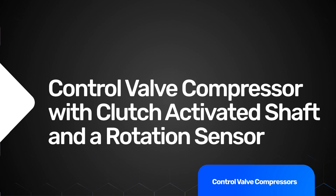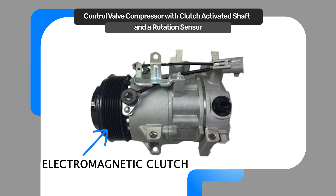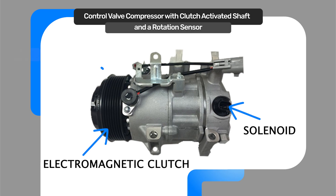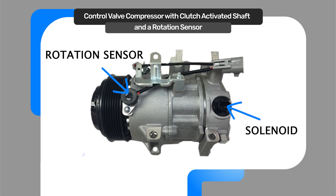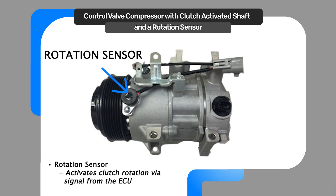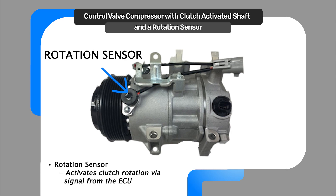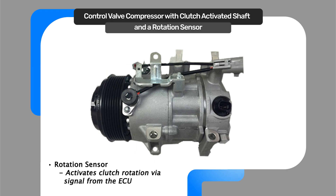This control valve compressor will feature an electromagnetic clutch, a control solenoid, and a rotation sensor. The rotation sensor activates clutch rotation when signaled by the ECU. The control unit must receive a signal from the rotation sensor before activating the compressor.